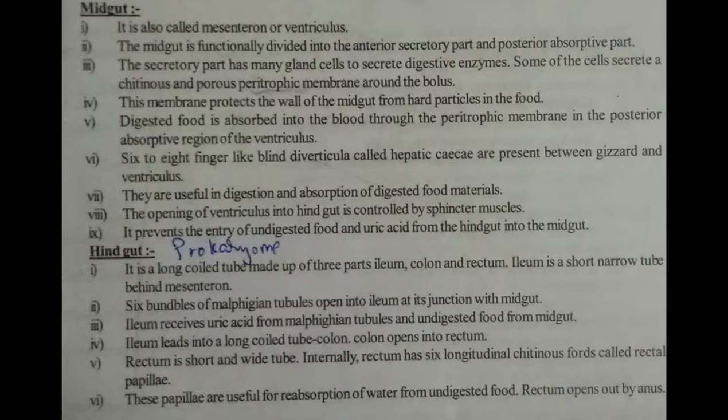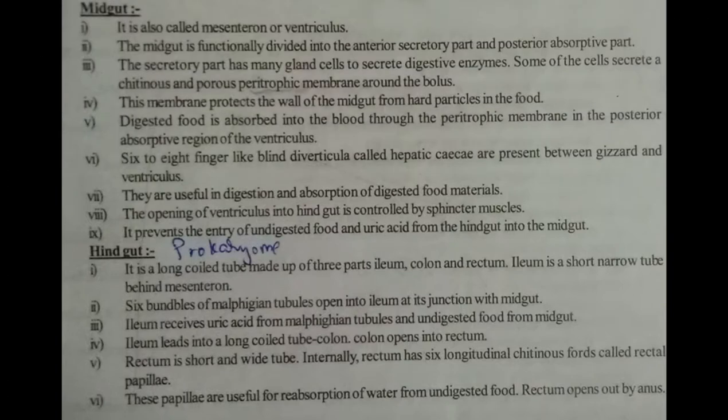In the posterior absorptive region of the ventriculus, six to eight finger-like diverticula called hepatic caeca are present between the gizzard and ventriculus. They are useful in digestion and absorption of food material. The opening of the ventriculus into the hindgut is controlled by sphincter muscles, which prevent the entry of undigested food and uric acid from the hindgut into the midgut.